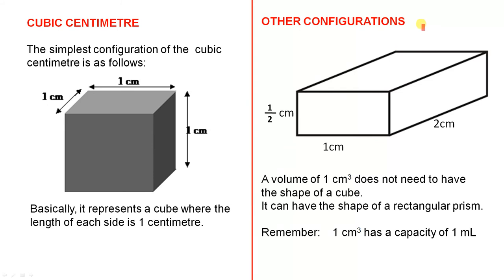Now you can have different configurations or different measurements — they don't have to look like this. A volume of one cubic centimetre does not need to have the shape of a cube. It can have the shape of a rectangular prism. It has a length of two centimetres, a width of one centimetre, and a height of half a centimetre. So if you multiply two by one by a half, that gives you one cubic centimetre. So it doesn't have to be a cube, because the volume of this object is the same as the volume of this object.